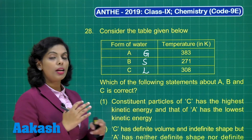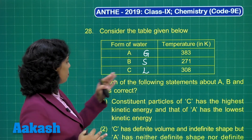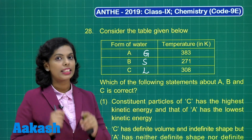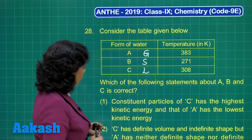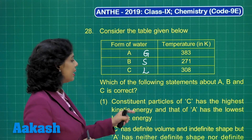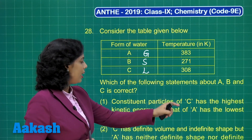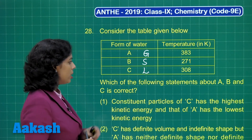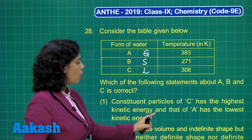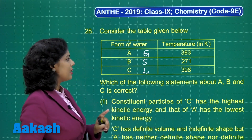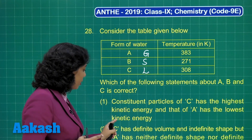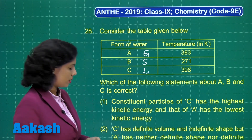Now, we need to compare the properties of A, B, and C and find out which statement is correct. Let's check statement number one: constituent particles of C have the highest kinetic energy and that of A has the lowest kinetic energy. C is liquid while A is gas. Gaseous state has the highest kinetic energy, but here it says lowest — so this is a wrong option.